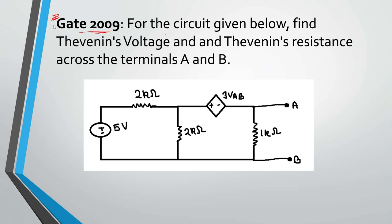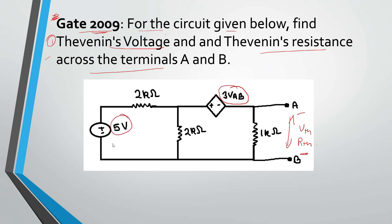I have combined two questions into one for better understanding. For the circuit given, find the Thevenin voltage and Thevenin resistance across terminals A and B. Here you can see a dependent voltage source and an independent voltage source. One thing to notice is that the load terminal is already open — you don't have to open it. Some students get confused and try to open the resistance, but in this question the load resistance is already open between terminals A and B.